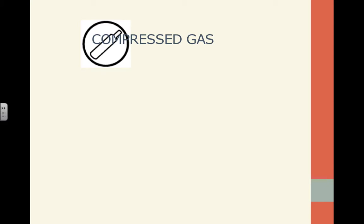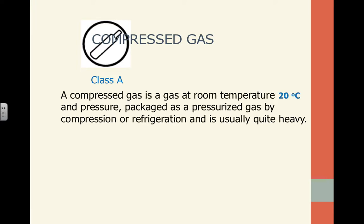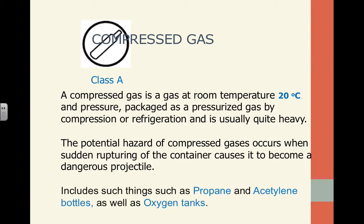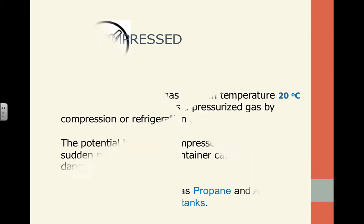The next symbol is compressed gas. Compressed gas is under pressure at room temperature. If exposed to extreme heat or if the container is ruptured, there could be an explosion and the object could become a projectile. For safety, we want to keep compressed gas at room temperature and never puncture or damage the exterior of the container. Examples include propane and oxygen tanks.